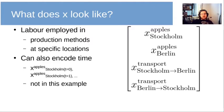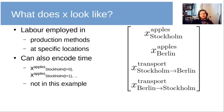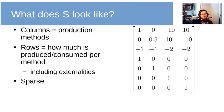Next, x contains the amount of labor employed in specific production methods at specific locations — the amount of labor employed growing apples in Stockholm or Berlin, or transporting things from Stockholm to Berlin or vice versa. It's possible to also encode time in x, giving the amount of labor employed in all these places for different planning periods, but that is omitted here for simplicity.